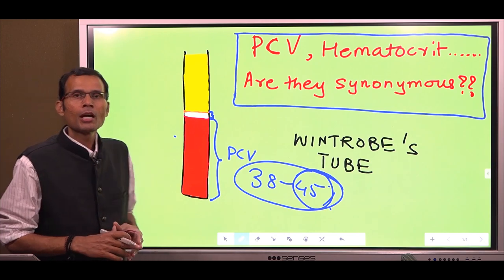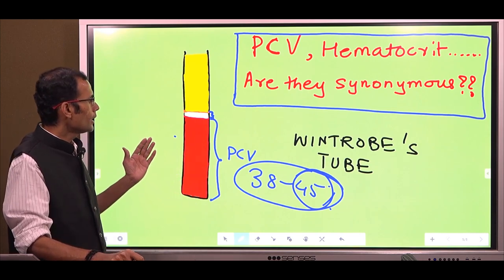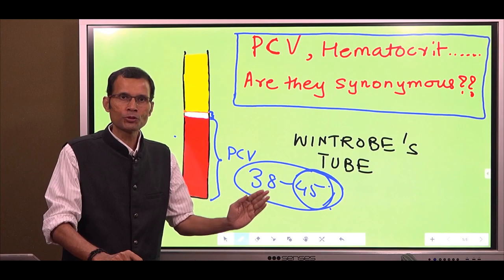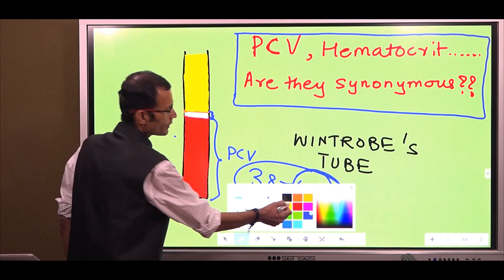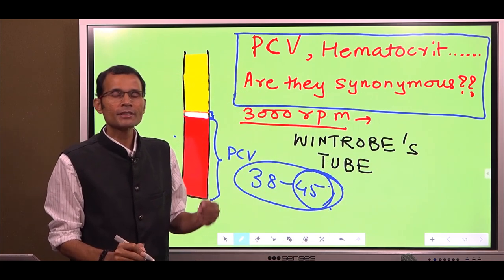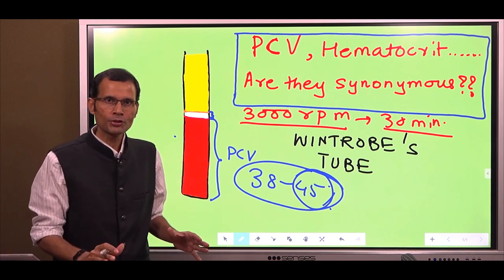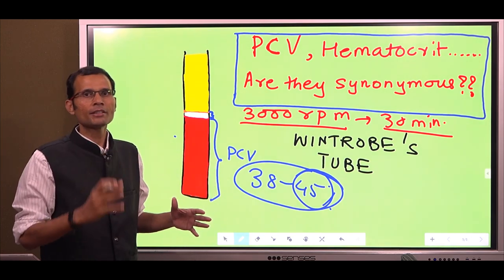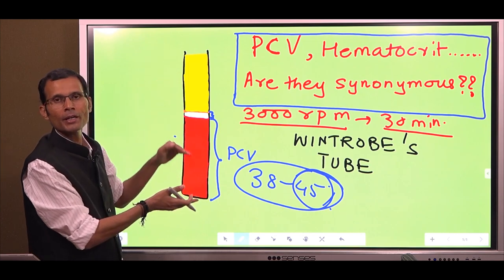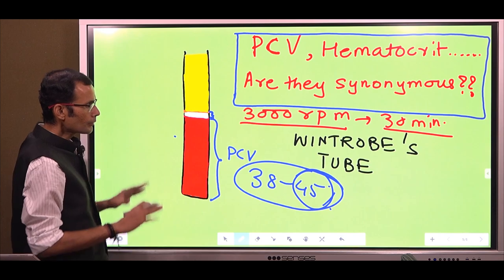PCV is performed in the Wintrobe's tube - the Wintrobe method. We collect a sample of whole blood, place it in a centrifuge, and run it at 3000 revolutions per minute for 30 minutes. With this centrifugal force, the RBCs and all cells in the blood are packed towards the bottom end of the tube, separated from the plasma. On the upper end you can see plasma, and cells packed near the bottom end.